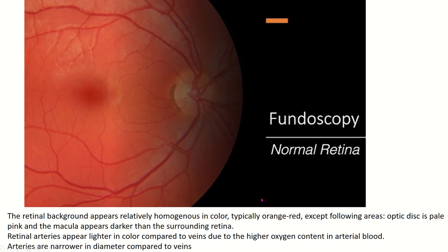The retinal background appears relatively homogenous in color, typically orange-red, except at the optic disc where it is pale pink, and at the macula where it appears darker than the surrounding retina. Retinal artery is lighter in color compared to the vein due to the oxygenated content in arterial blood. The artery is also smaller in diameter than the vein.